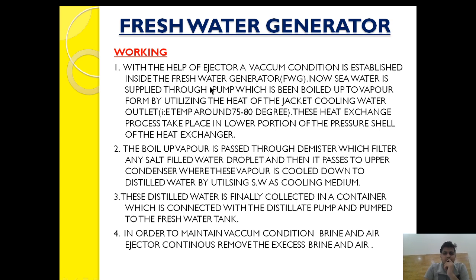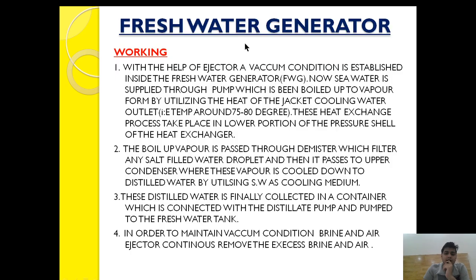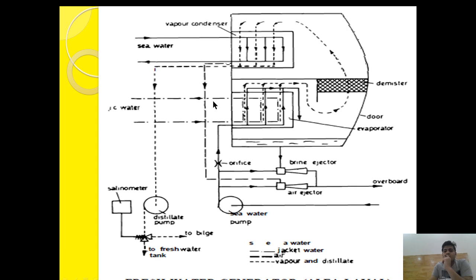With the help of the brine ejector and air ejector, a vacuum condition is established inside the fresh water generator cell chamber. Sea water is supplied through the pump and boiled up to vapor form by utilizing the heat of the jacket cooling water outlet. The sea water takes suction from the sea water pump and is passed through a restricted orifice to the evaporator, where it exchanges heat with the jacket water coming from the engine outlet at around 75 to 80 degrees Celsius.